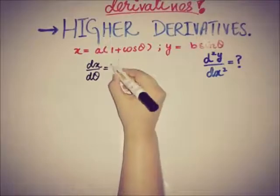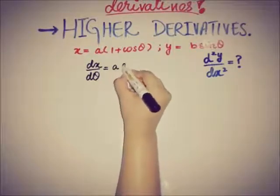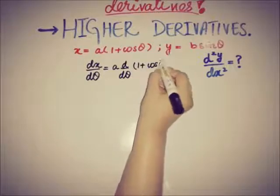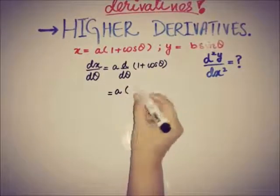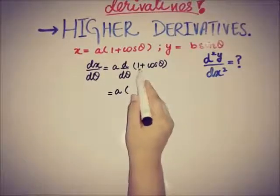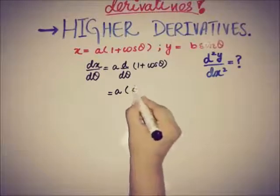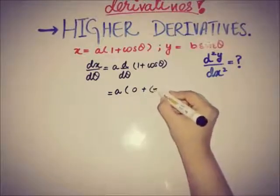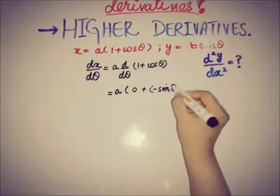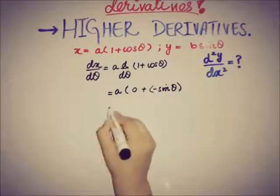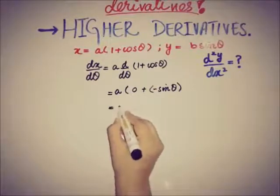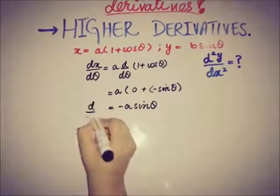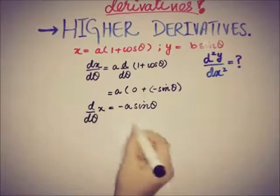Finding dx/dθ: since a is a constant, a comes out and we take d/dθ of (1 + cosθ). The derivative of the constant 1 is zero, and the derivative of cosθ is −sinθ, so dx/dθ = −a sinθ.